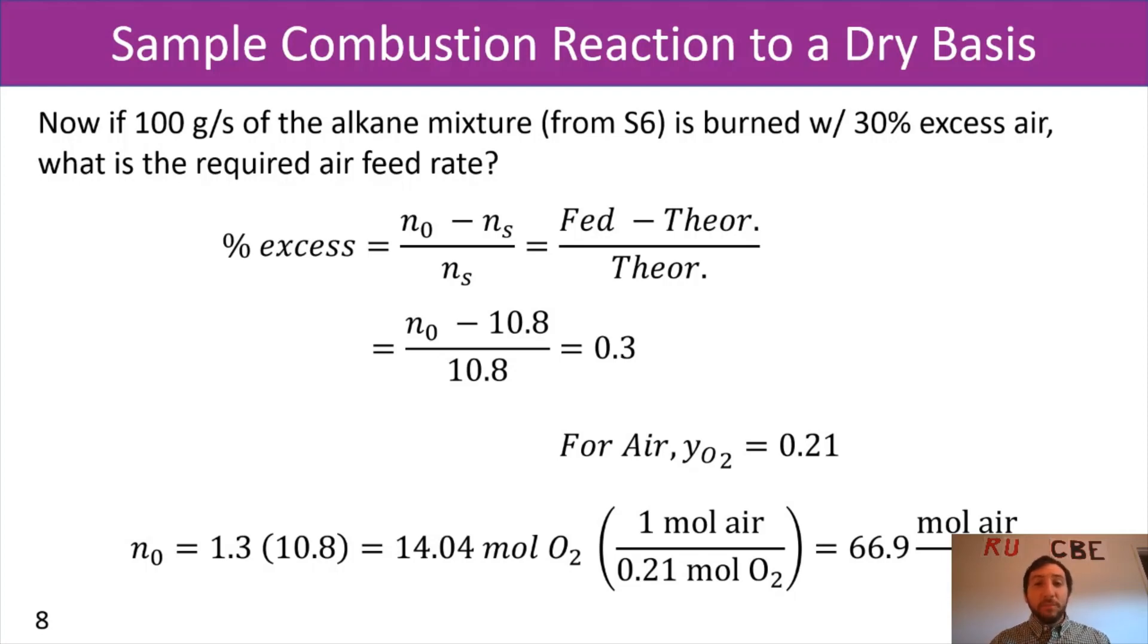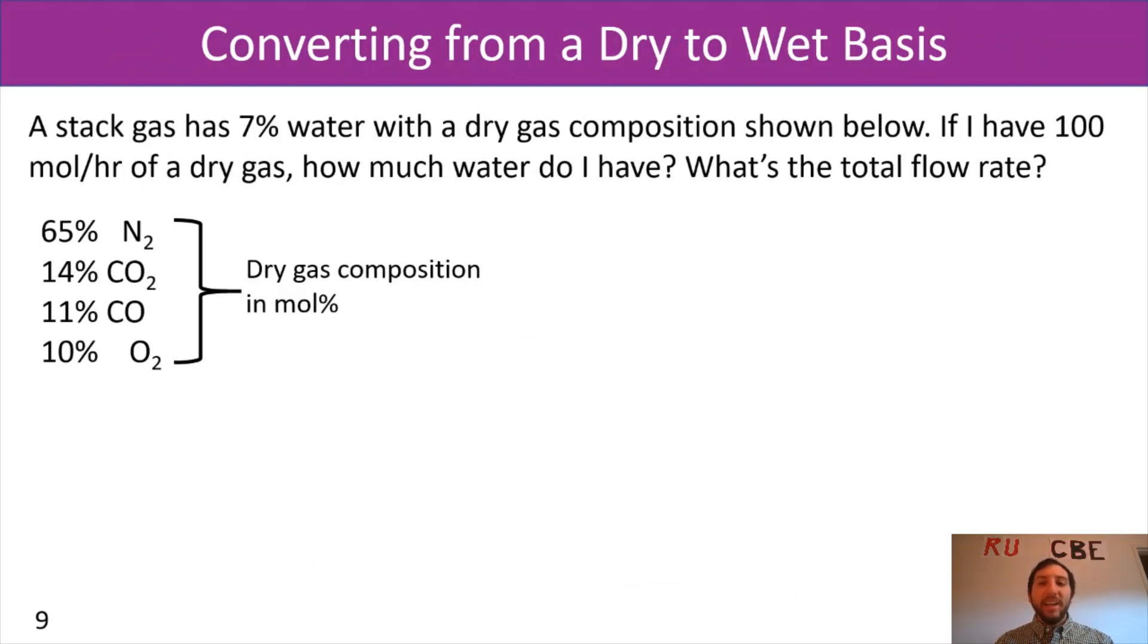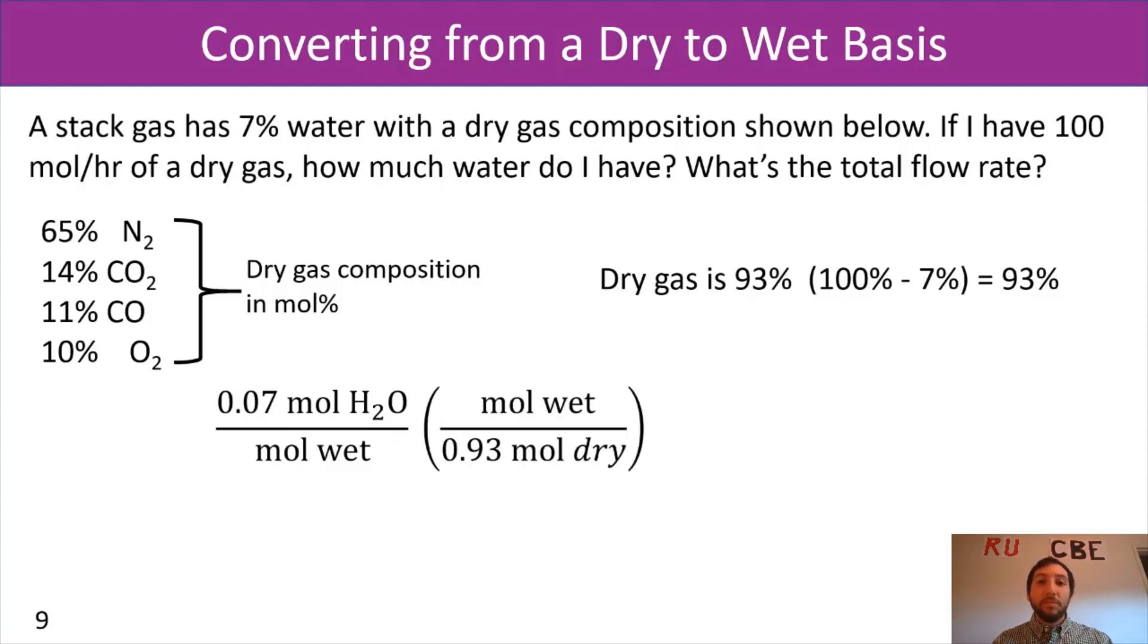Now, on the flip side, so in this case, we went from a wet basis to a dry basis. We now can also go from a dry basis to a wet basis, which is this next slide. And in this case, we've got another sample problem. And I say that I have a stack gas that has 7% water and the dry gas compositions are shown below on that middle of the slide. If I have 100 moles per hour of a dry gas, how much water do I have? And what's the total flow rate? Now remember, so I said 7% is water. So that means that I have 93% dry gas. And I got that because I did 100 minus 7%, giving me 93%. And we know that for, on a wet basis, I have 7% water per mole of wet gas. So we know that. We also know that if we had everything in our system, so all molecules were accounted for, that would be our wet basis. And so for one mole wet, I have 0.93 moles dry gas.